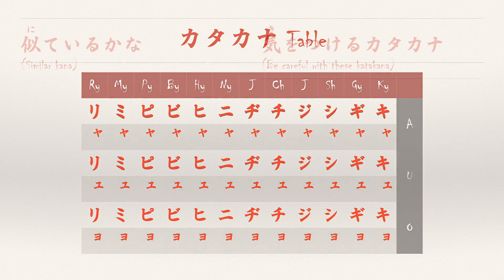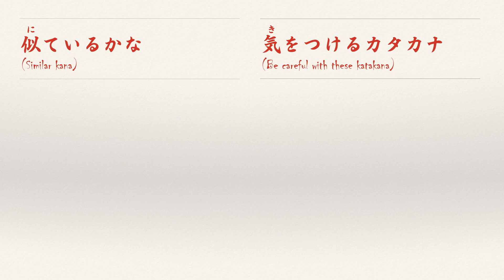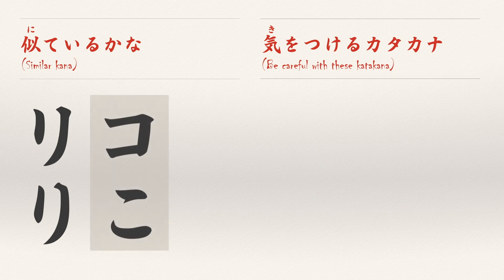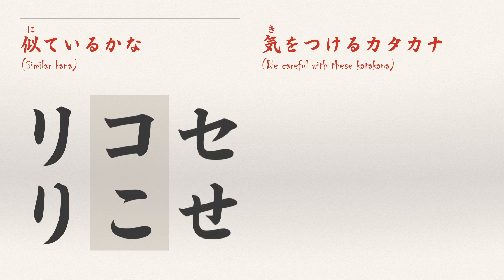Before we move on, let's address some of the things that we've noticed. I did mention earlier that the katakana and hiragana Ri look a lot alike. But if you take out the vertical stroke, so do the katakana and hiragana Ko. And of course, with a simple stroke left out, Se and Se also look a lot alike. Hopefully that will make these characters easier to remember.